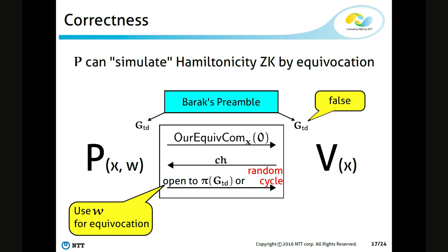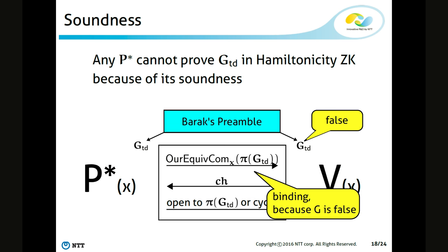The prover can generate the accepting Hamiltonian zero knowledge proof by committing a zero-zero matrix using our equivocal commitment, and then opening the commitment to either a random permutation of the trapdoor statement or a random cycle, depending on the value of the challenge. So even though the prover has to prove a false statement, the correctness of our protocol still holds. The soundness of our protocol follows almost immediately from the soundness of Hamiltonian zero knowledge. Since Barak's preamble guarantees that the trapdoor statement is false for any cheating prover, the cheating prover has to prove a false statement in Hamiltonian zero knowledge. Since in the setting of soundness the statement X is false, our equivocal commitment is binding, and using the same argument as the soundness proof of Hamiltonian zero knowledge, we can conclude that our protocol is sound.